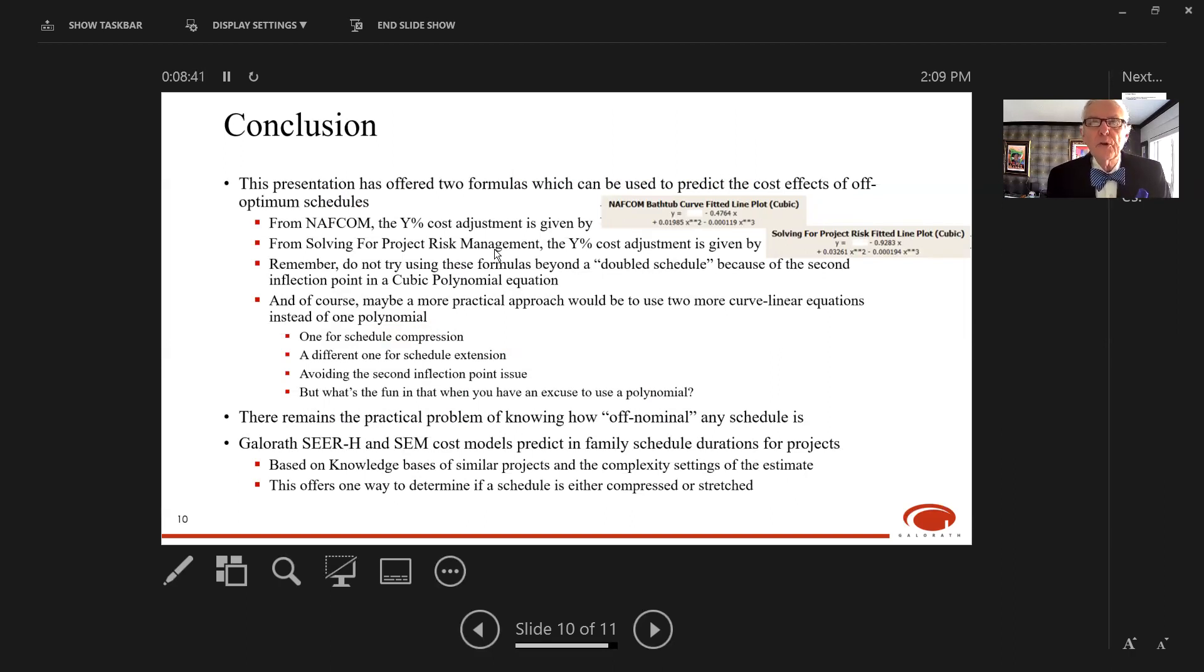This presentation has offered two formulas which can be used to predict the cost impacts of off-optimum schedules—one from NAFCOM and one from the project risk management book. Remember, don't try to use these formulas beyond a double schedule because each has a second inflection point due to the cubic polynomials. That's beyond the range of applicability for these formulas.